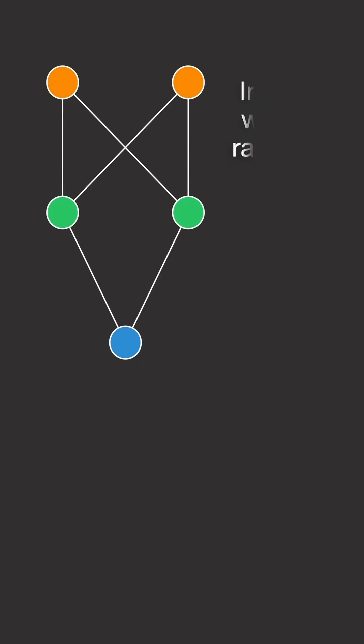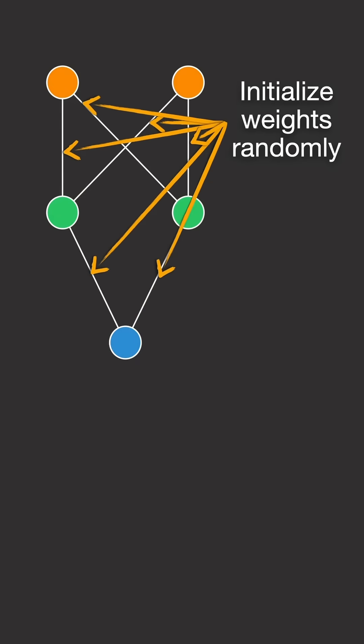So what's the solution to this? Initialize weights randomly, typically from a normal distribution multiplied by a small number like 0.01.